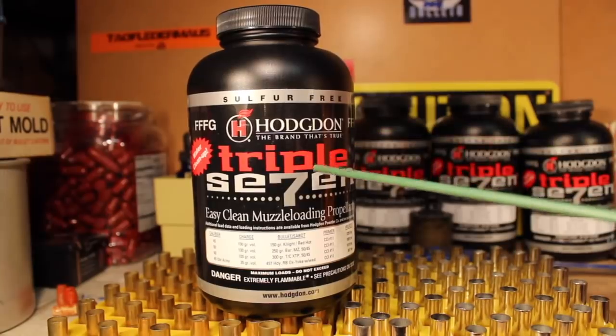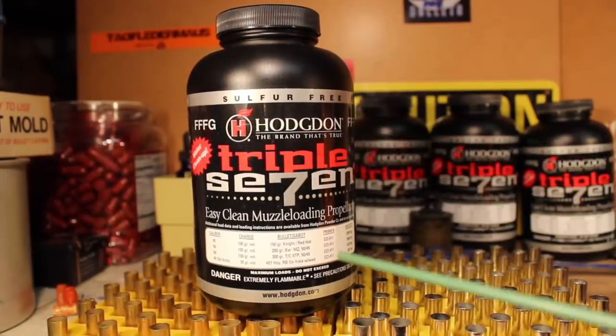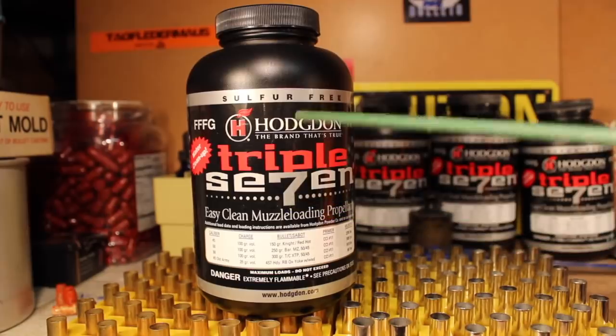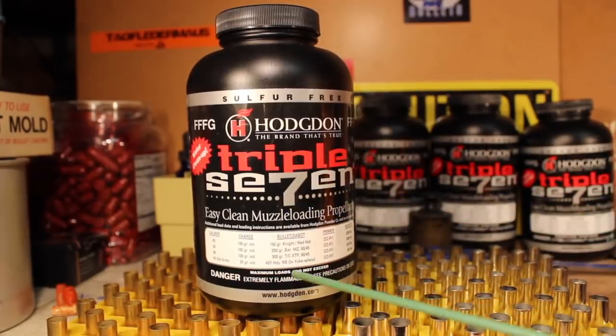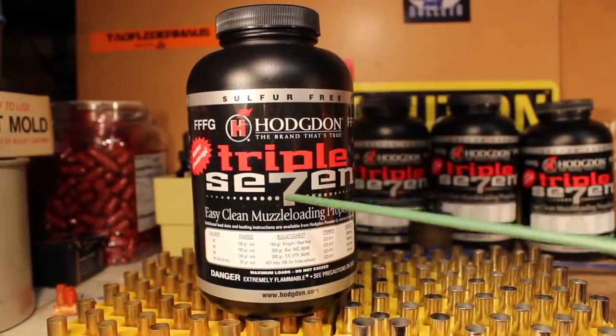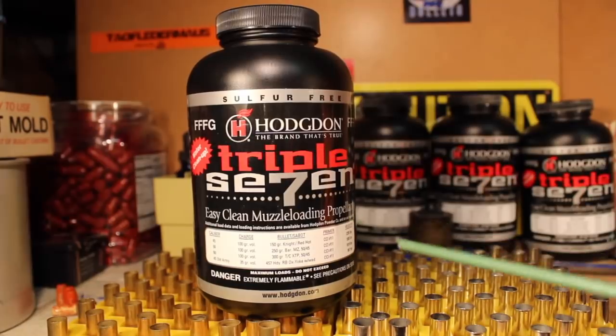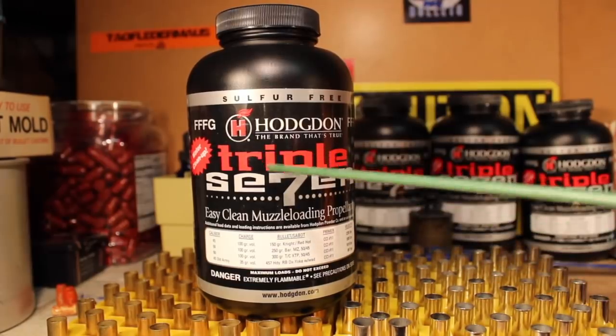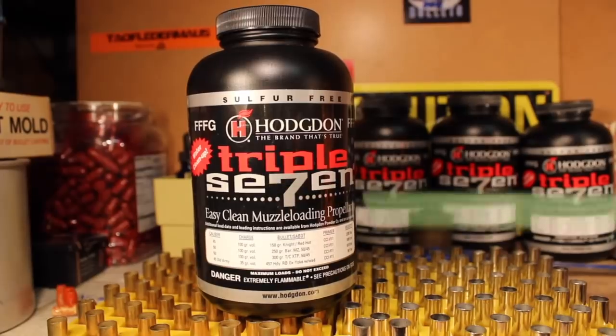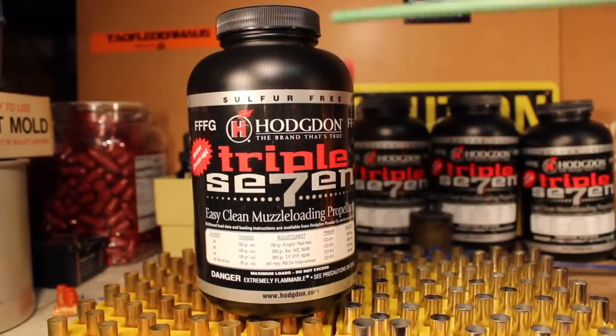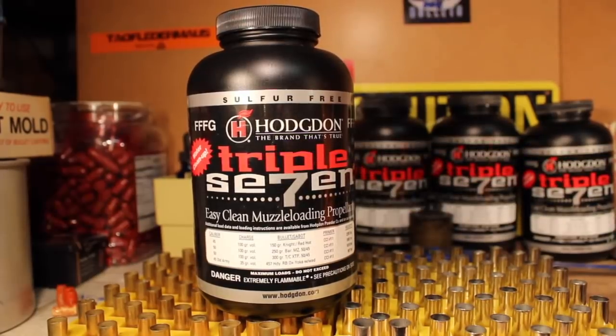So here's our Hodgdon 777-3FG powder. And as you know, it's not recommended by the factory to use 777-3FG in cartridges. But it works splendidly in cartridges. Let's go ahead and give it a try in the .357 caliber.